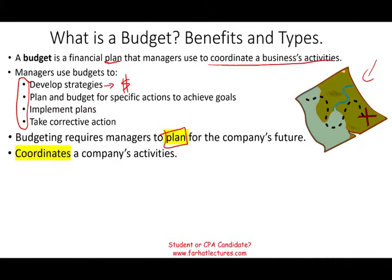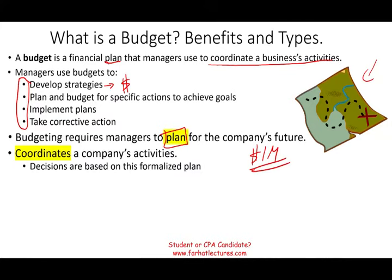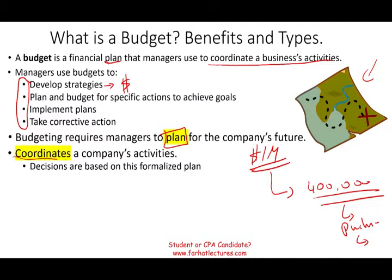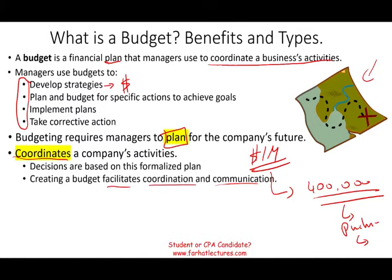Another benefit of a budget is you can coordinate the company's activities — everyone making decisions on the same page. If I know I'm going to sell one million dollars worth of sales, I may need to purchase $400,000 worth of input. So I need to talk to the purchasing department, which will need to talk to the cash department to make sure we can pay for this. We are all coordinating activities in a formalized plan, facilitating coordination and communication.